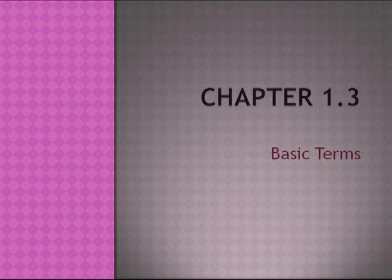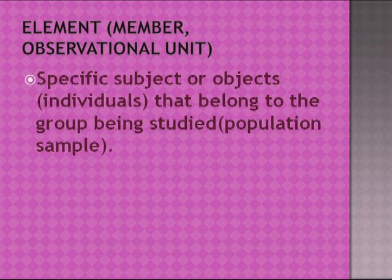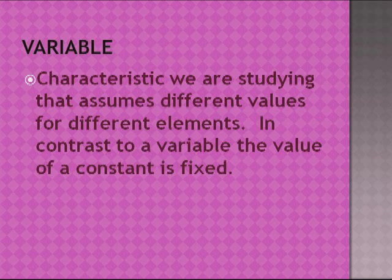Chapter 1.3: Basic Terms. An element, or member, also called an observational unit, is a specific subject, object, or individual that belongs to the group being studied — the population or sample. A variable is a characteristic being studied that assumes different values for different elements. In contrast to a variable, the value of a constant is fixed.